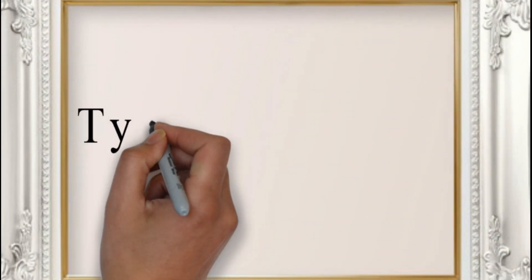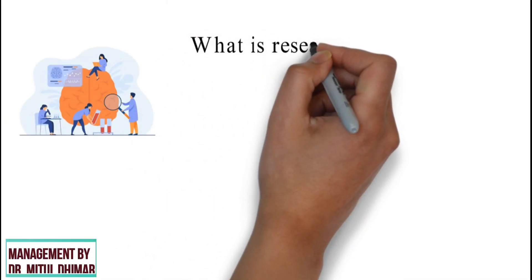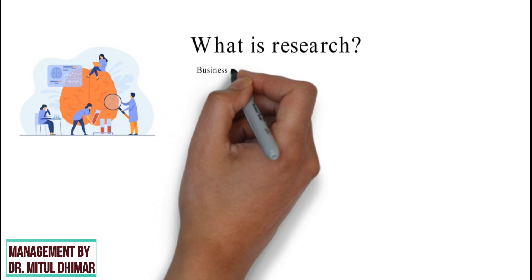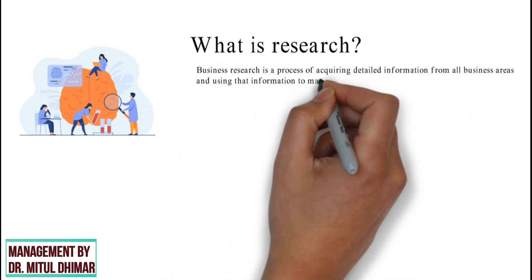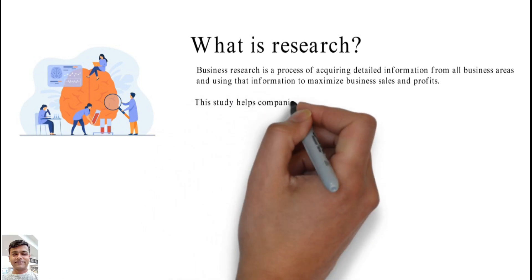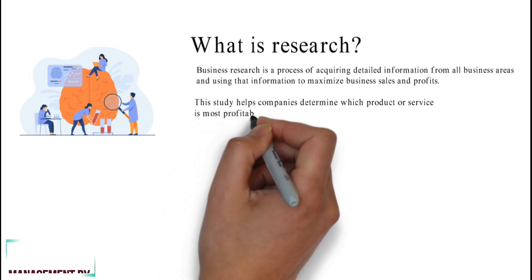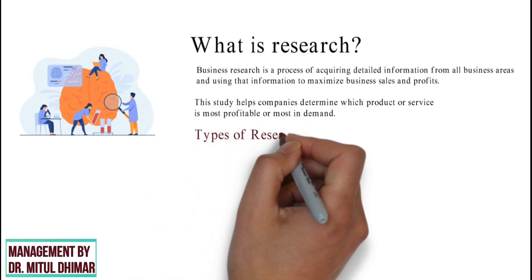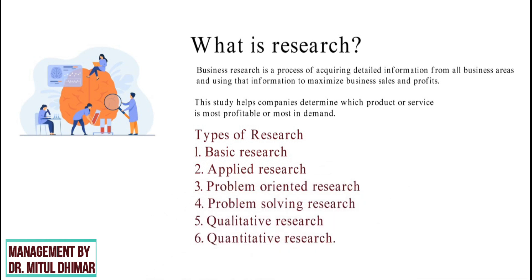Hello friends. Today in this video we are going to study types of research in detail. First of all let us understand the basic meaning of research. Business research is a process of acquiring detailed information from all business areas and using that information to maximize business sales and profit. This study helps companies determine which product or service is most profitable or most in demand.